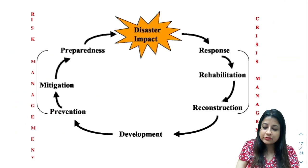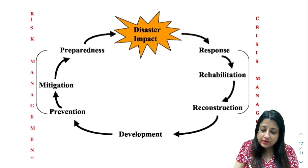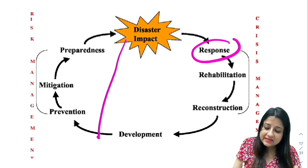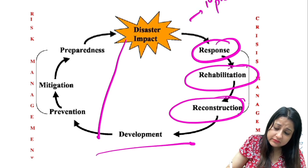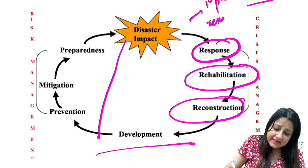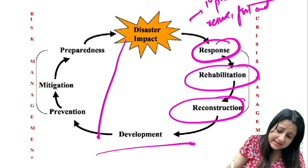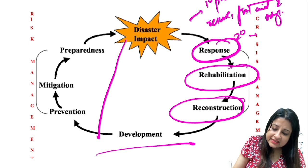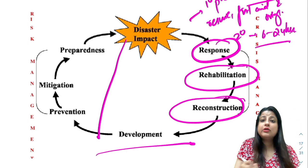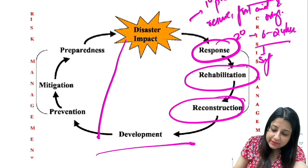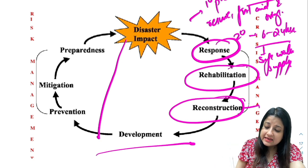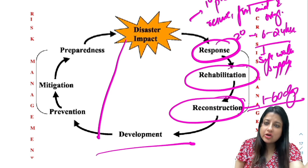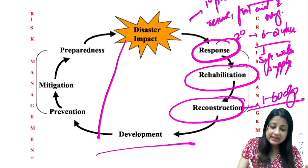Looking at the disaster cycle: after impact there is response, rehabilitation, reconstruction, and development. Response is divided into phases — primary phase (0 to 6 hours) where we provide rescue, first aid, triage and tagging; secondary phase (6 to 24 hours) where we ensure safe water supply, since gastrointestinal infections are most commonly reported after a disaster, so we ensure chlorination and safe water supply. Reconstruction is 1 to 60 days, ensuring everybody gets food, clothing, and shelter while rebuilding society.